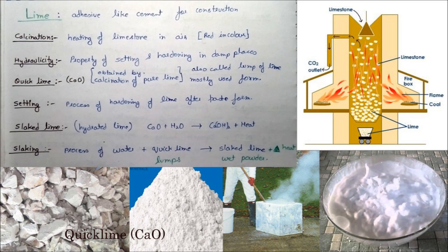Coming to lime. Lime is known as traditional cement — it is adhesive like cement and used for construction and as a binding material. Before discussing lime, there are some terms we need to know. Calcination is the heating of limestone until it turns red in color in the presence of air. Hydraulicity is the property of setting and hardening of lime in damp places.